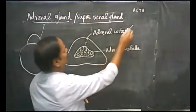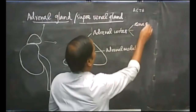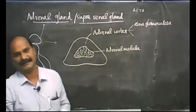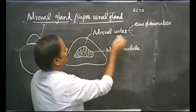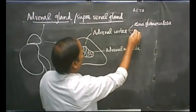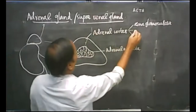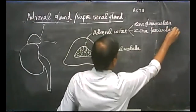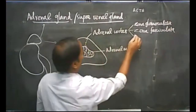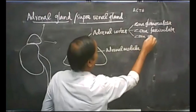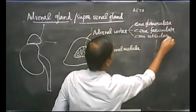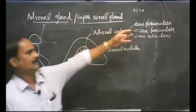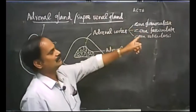The three areas are named as zona glomerulosa, which is the outermost part of the adrenal cortex. The middle part is called zona fasciculata. The innermost network of blood capillary areas is called zona reticularis. So structurally, the adrenal cortex is composed of these three zones: zona glomerulosa, fasciculata, and reticularis.